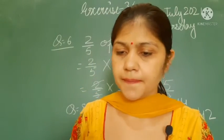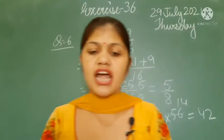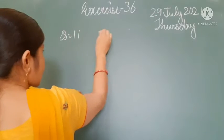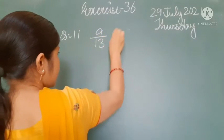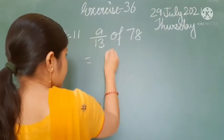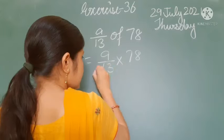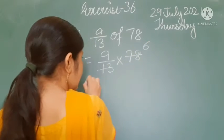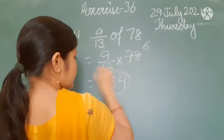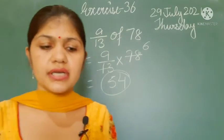Question number 11: 9 by 13 of 78. This means 9 by 13 multiplied by 78. 13 sixes are 78, so we cancel 78 with 13 to get 6. Then 9 × 6 is 54. The answer to question number 11 is 54.